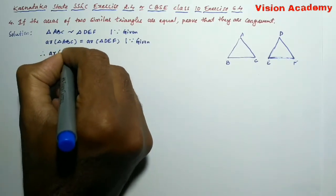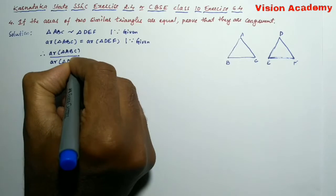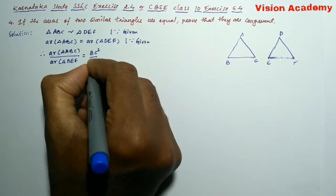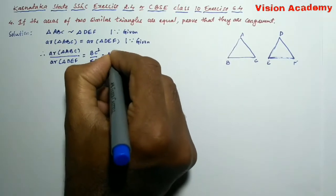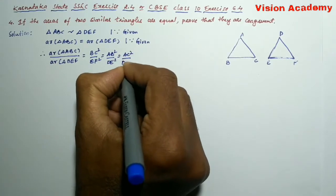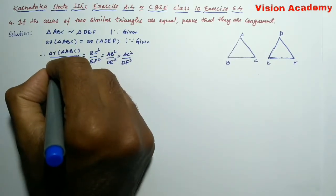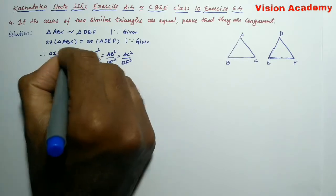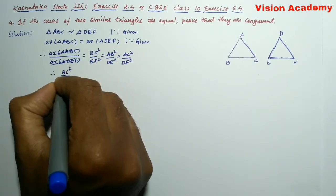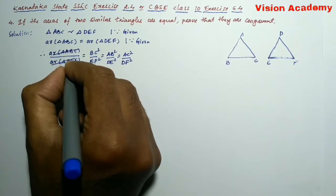we can write area of triangle ABC divided by area of triangle DEF is equal to BC square divided by EF square. Here, both of these two areas are same. That's the reason both of these two will get cancelled. And here, therefore, we can write BC square divided by EF square is equal to 1 because both of these two areas got cancelled.